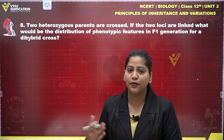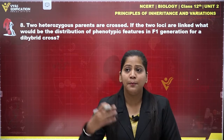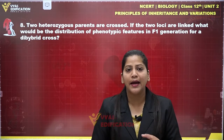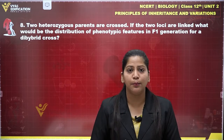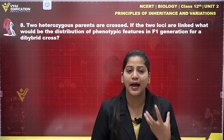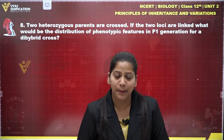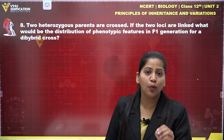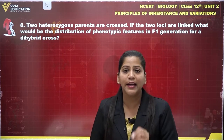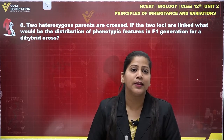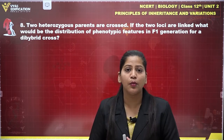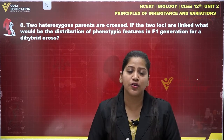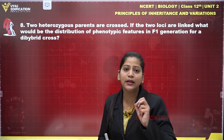For example, the yellow-bodied and white-eyed wild-type parent in Drosophila produces wild-type and yellow-bodied and white-eyed offspring. The yellow-bodied gene and the white-eyed gene in Drosophila are linked genes. They are present on the same chromosome and lie close to each other, so they transfer into the next generation together.